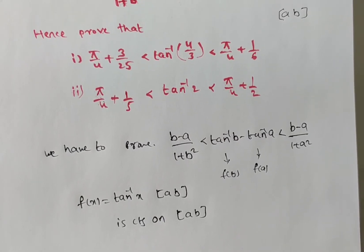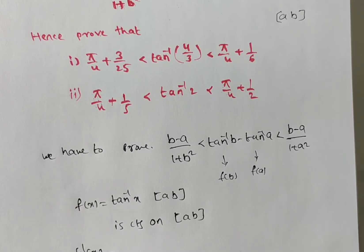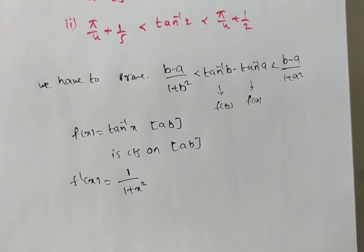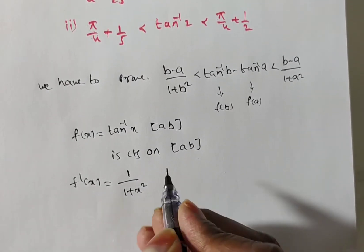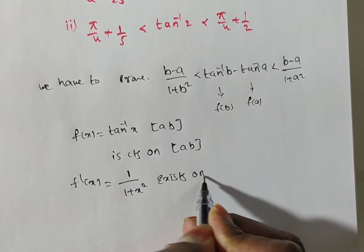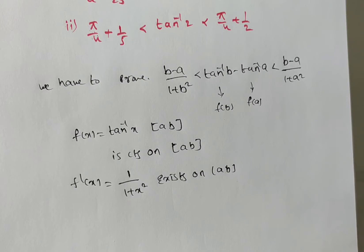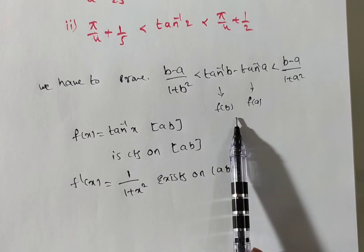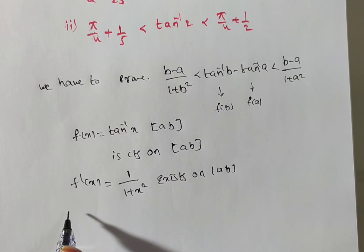So f(x) is continuous. Now f'(x): the derivative of tan inverse x is 1 by (1 plus x square). So f'(x) equals 1 by (1 plus x square), which exists on the open interval (a, b). Two conditions are satisfied. Also f(b) = tan inverse b and f(a) = tan inverse a — both are not equal, so we can apply Lagrange's mean value theorem.